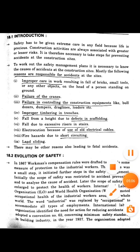The next topic is evaluation of safety. In 1867, workmen's compensation rules were drafted to provide some measure of protection to industrial workers — a small step in the future of safety management. Initially, the scope of safety was restricted to accident prevention and analysis. Later, the International Labour Organization (ILO) and World Health Organization (WHO) promoted occupational health for industrial workers worldwide, and the word 'industrial' was replaced by 'occupational' to accommodate all types of employees.